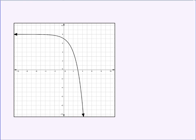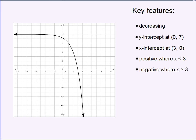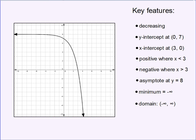Now let's do the same thing with our exponential graph. Looking at its key features, we can see that this graph is decreasing everywhere — from negative infinity to infinity. It has a y-intercept at 7 and an x-intercept at 3. It's positive everywhere that x is less than 3, from negative infinity to positive 3, and it's negative from 3 to infinity. It has an asymptote at y equals 8, so we can say it approaches 8 for its maximum value. The minimum is at negative infinity, and the domain spans negative infinity to infinity, or all real numbers.